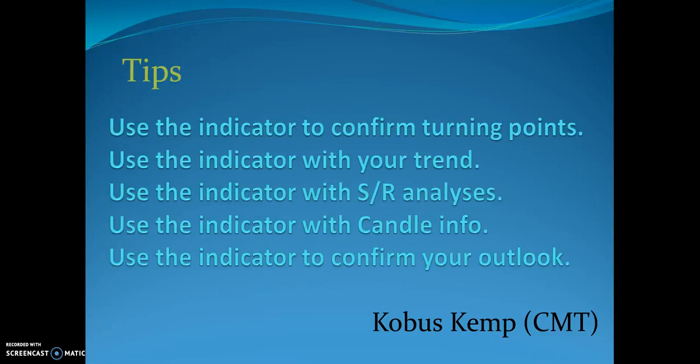Number one: use the indicator to confirm turning points — it is an oscillator that shows turning points, not trend. Use the indicator with your trend — very important. Use the indicator with support and resistance analysis or levels. Use the indicator with candle information. And use the indicator to confirm your outlook. I have nothing against the stochastic. What I disagree with is taking trades based on indicators only — use them to confirm what you are already seeing on the charts.